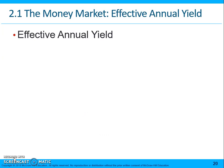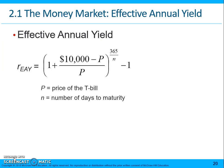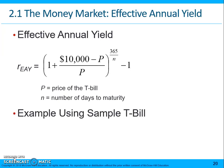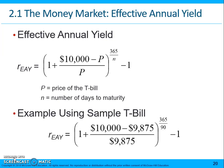The effective annual yield formula is: one plus (F minus P divided by P), raised to the power of (365 divided by the number of days to maturity), minus one. Using the same example: (1 + ($10,000 − $9,875) ÷ $9,875) raised to the power of (365 ÷ 90), minus one.